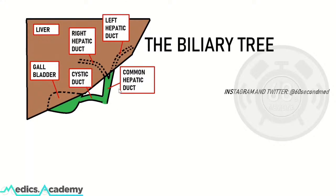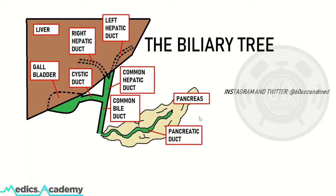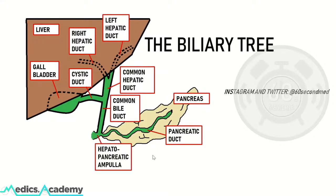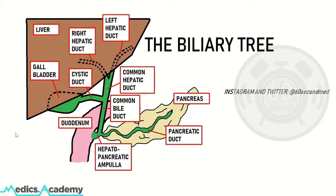Bile flows via the left or right hepatic duct, which unite to form the common hepatic duct. The common hepatic duct and the cystic duct unite to form the common bile duct. Secretions from the pancreas are drained via the pancreatic duct to meet the common bile duct at the hepatopancreatic ampulla. All these secretions can then flow into the duodenum, more specifically in the second part of the duodenum. These secretions are controlled by the sphincter, which is a muscular sphincter surrounding the hepatopancreatic ampulla.